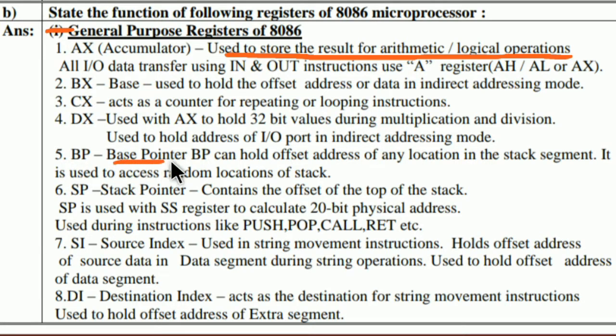The fifth is BP, which is known as the BASE pointer. BP can hold the offset address of any location in the stack segment. It is used to access random locations of the stack.